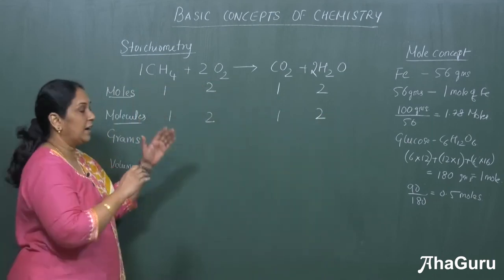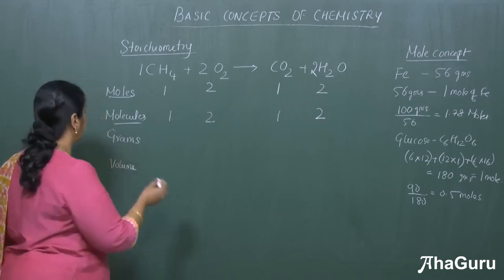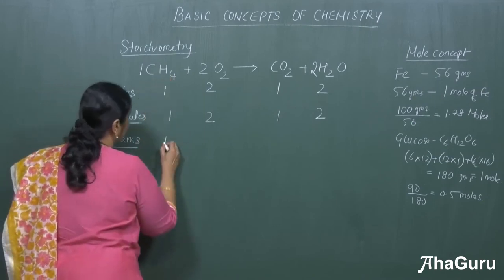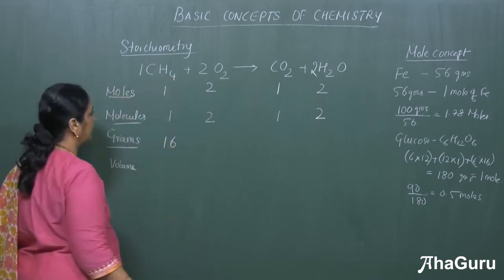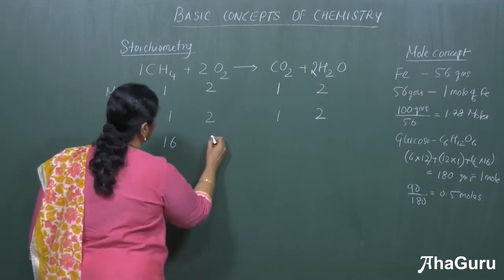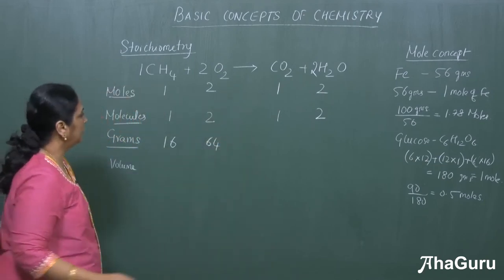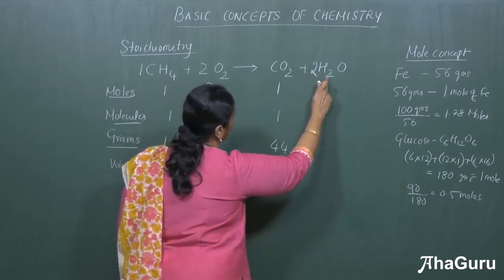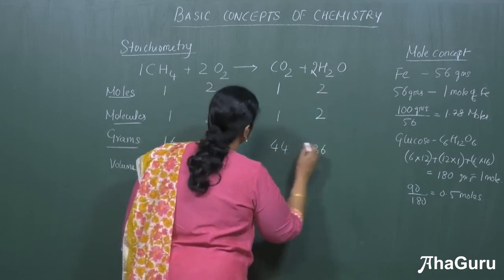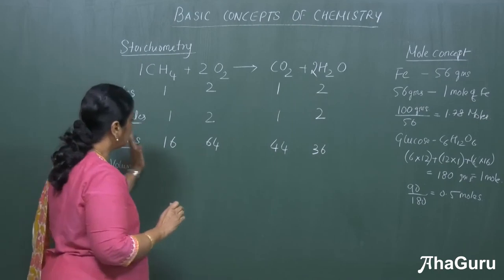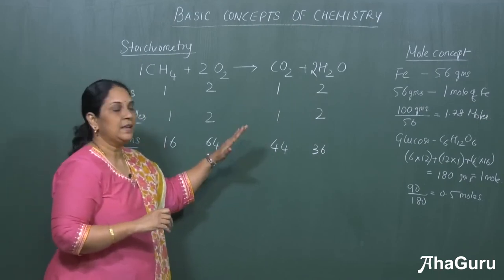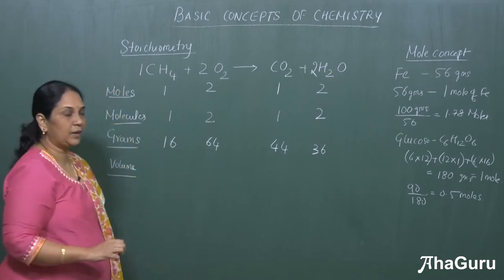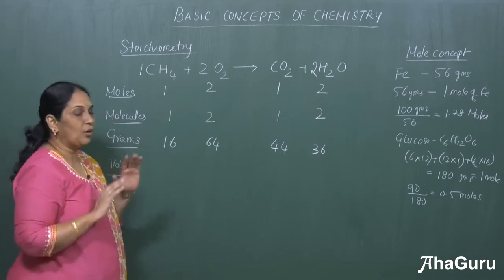When expressing in grams, convert using molecular weights. Methane is 12 + 4 = 16 grams. Oxygen: 2 × 32 = 64 grams. Carbon dioxide is 44 grams, and water is 18 × 2 = 36 grams. So to express stoichiometry in grams, you simply calculate the molecular weight of each substance and express that value in grams.